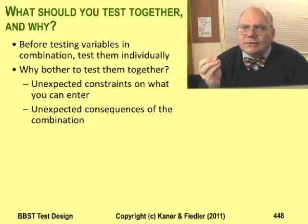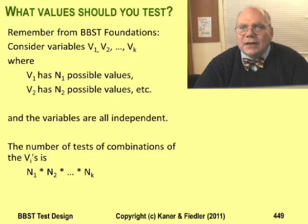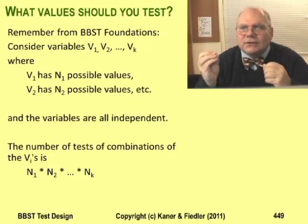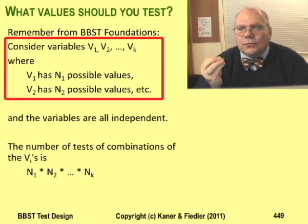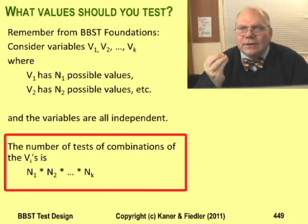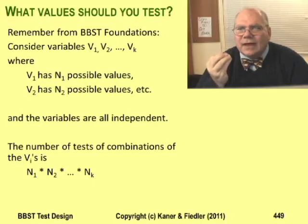You won't find those kinds of interactions unless you're testing variables together. The problem underlying combination testing is that the number of possible combination tests is huge. Consider a variable V1 that has N1 possible values, V2 which has N2 possible values, and V3 that has N3 possible values. If V1, V2, and V3 are independent, then the number of possible tests is N1 times N2 times N3. If you add a value to one of the variables, the number of tests multiplies by all of the tests of all the other variables.